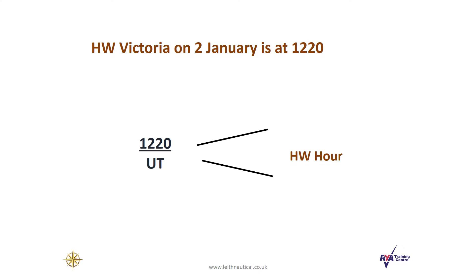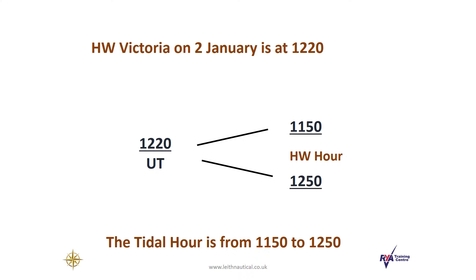Let's take the 2nd of January. The time of high water at Victoria is 12:20. So let's mark up the Tidal Hour, which we refer to as high water hour. Our Tidal Hour starts at 11:50 and ends at 12:50. We call this high water hour.